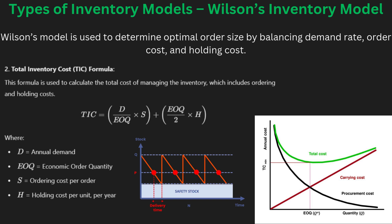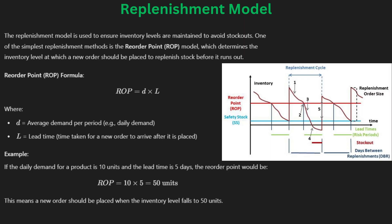Material Requirement Planning (MRP) is a system that helps businesses plan the materials they need for production. It ensures that materials are available at the right time to avoid delays. MRP systems use data like production schedules, inventory levels, and lead times to calculate how much material is needed. This helps reduce waste and save cost, and is essential for industries like manufacturing where accurate material planning improves overall efficiency.